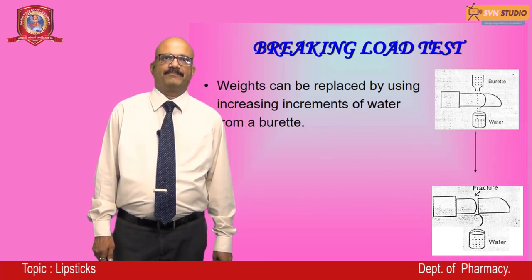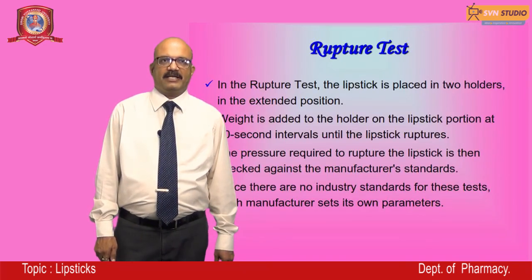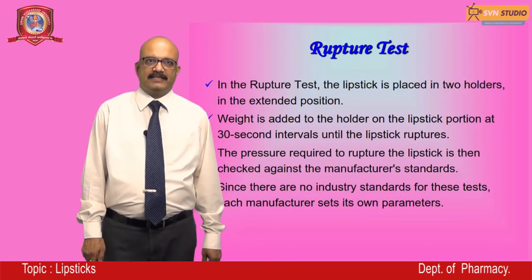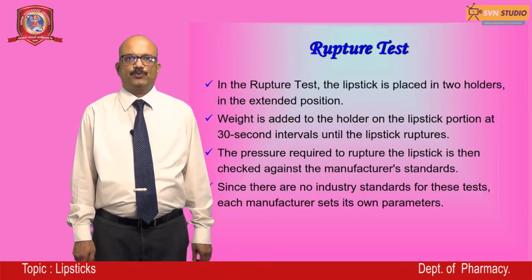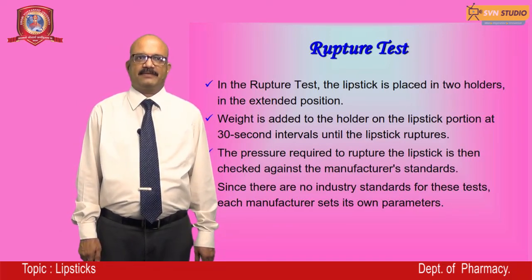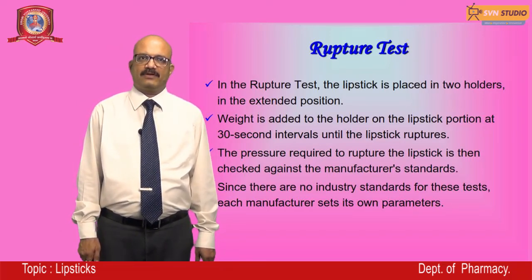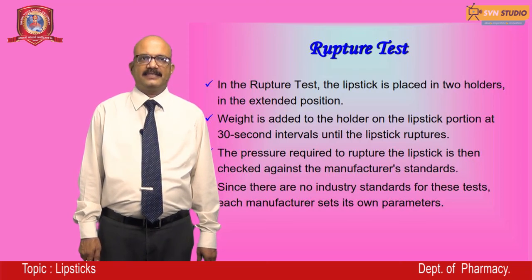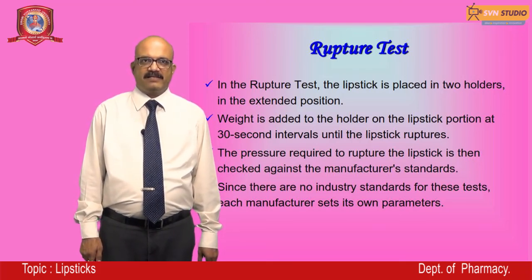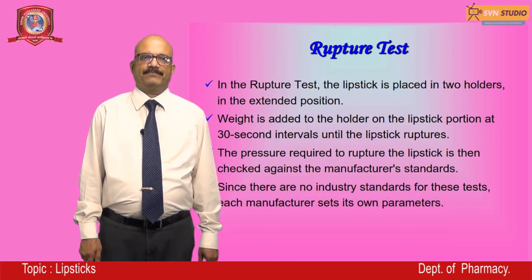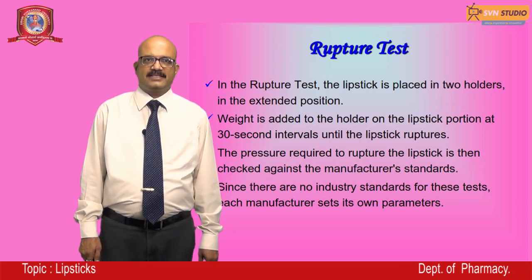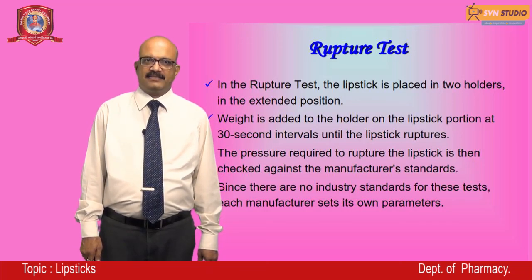In the rupture test, the lipstick is placed in two holders in the extended position, then weight is added to the holder on the lipstick portion at 30-second intervals until the lipstick ruptures. The pressure required to rupture the lipstick is then checked against the manufacturer's standards. Since there are no industry standards for these tests, each manufacturer sets its own parameters.